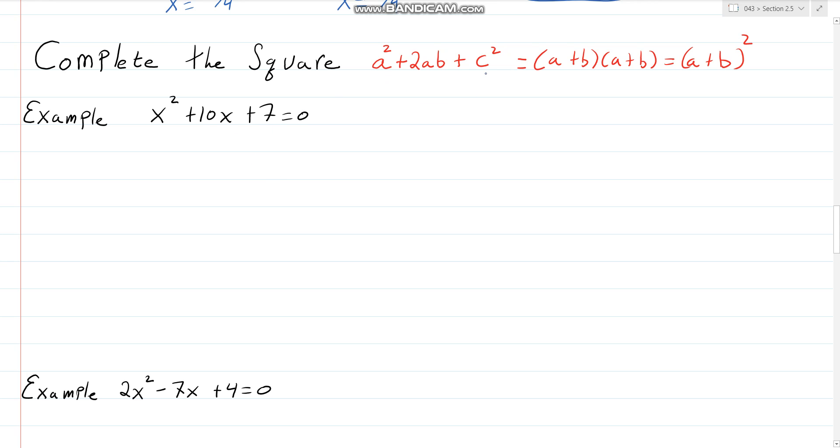Now completing the square, I wrote this out. This is a perfect square trinomial here. You have x² + 2ab + c² and that would be (a+b)(a+b), or you can write it as (a+b)². An example of that might be x² + 4x + 4 is a perfect square of (x+2)². So that's the previous knowledge we need to know.